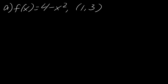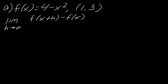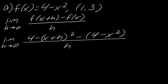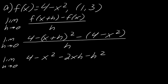Starting with example A. Remember the formula for the derivative: it's the limit as h approaches zero of f(x+h) minus f(x), all over h. The first thing we want to do is evaluate all of that. So I'm going to plug x+h into my function and then subtract f(x). Now we have to foil this part out, so this is going to be minus x squared minus 2xh minus h squared.